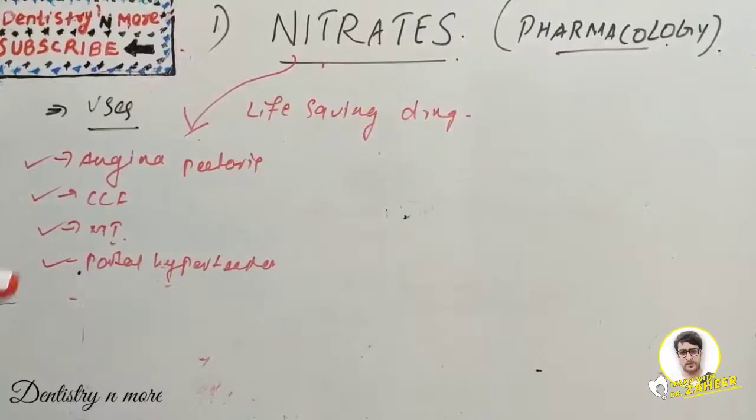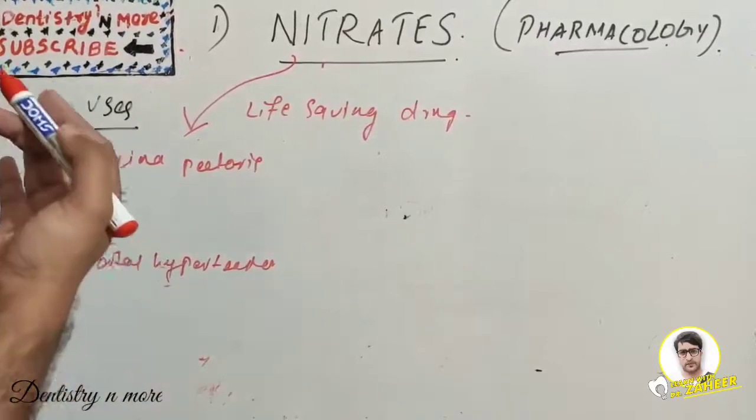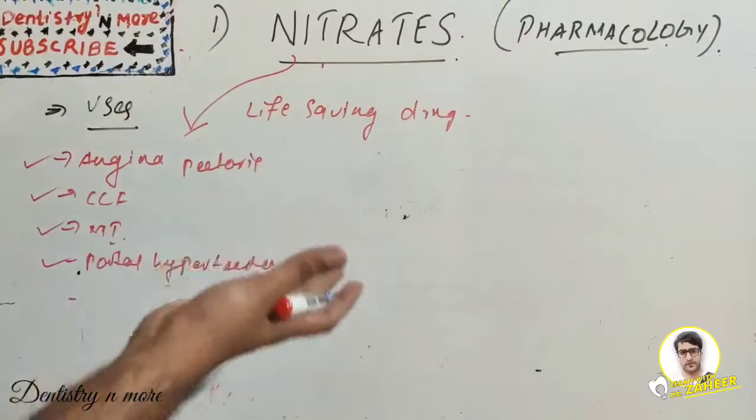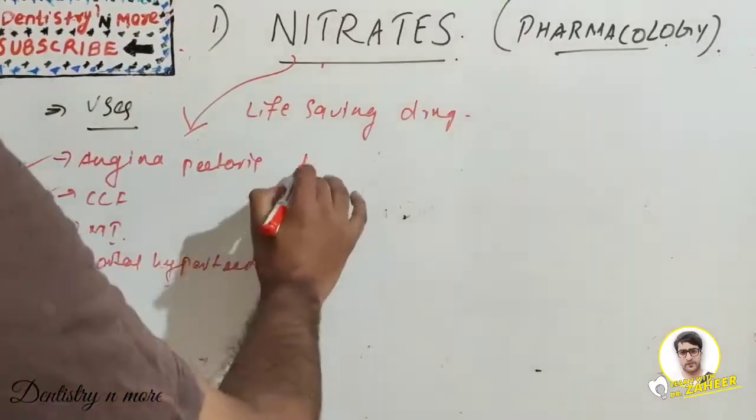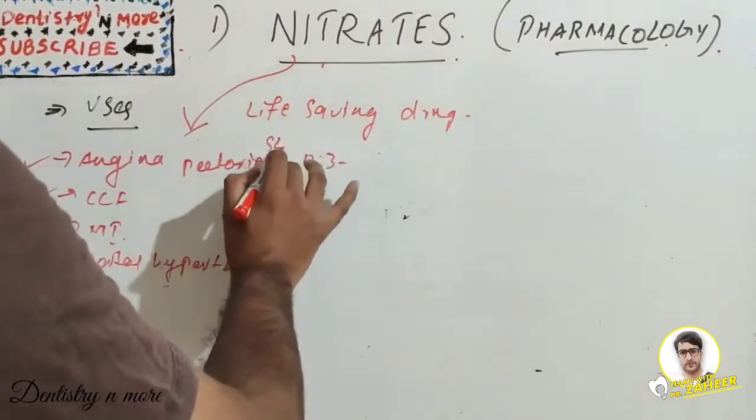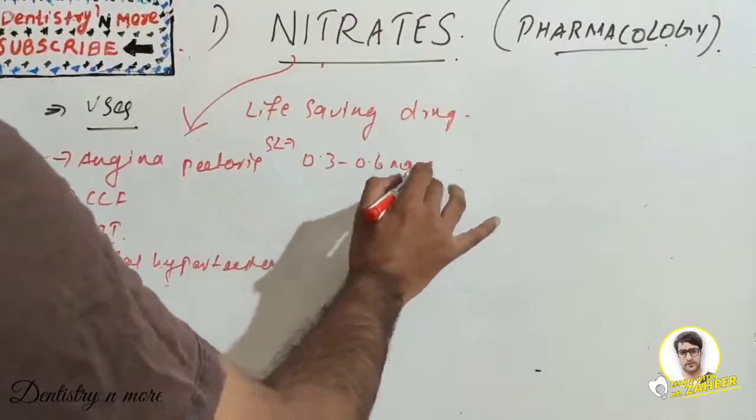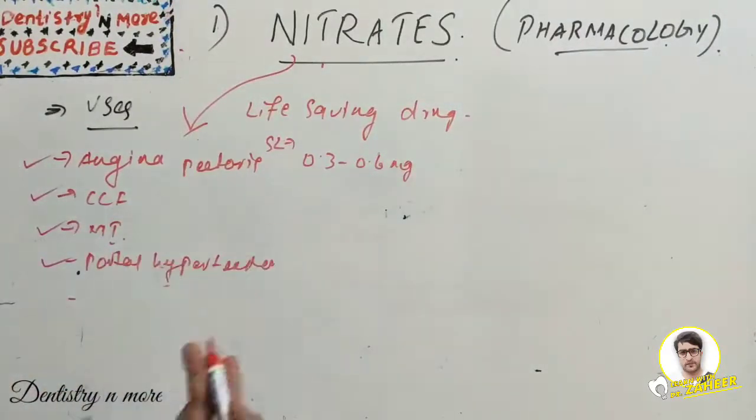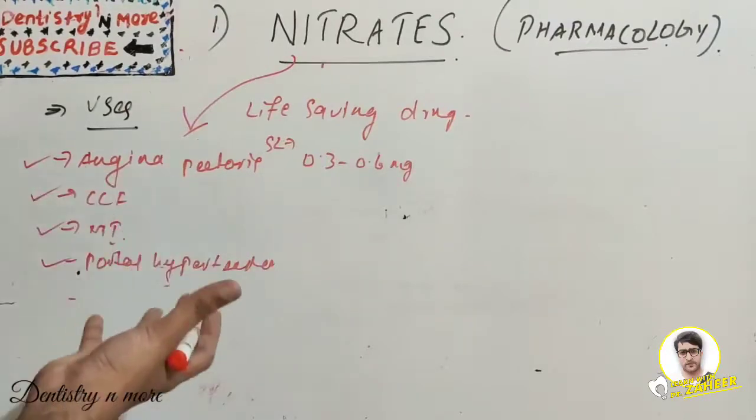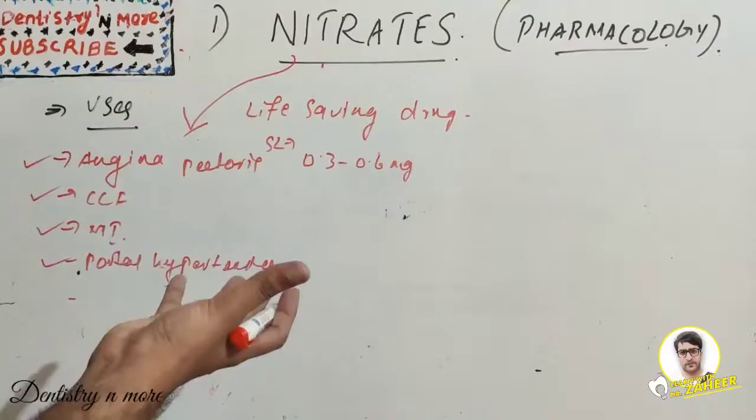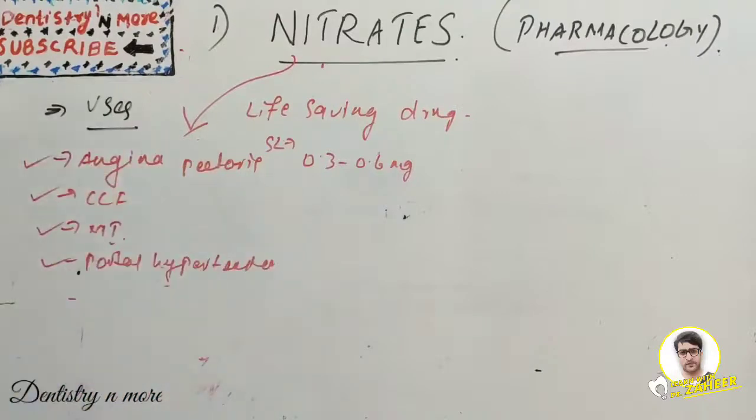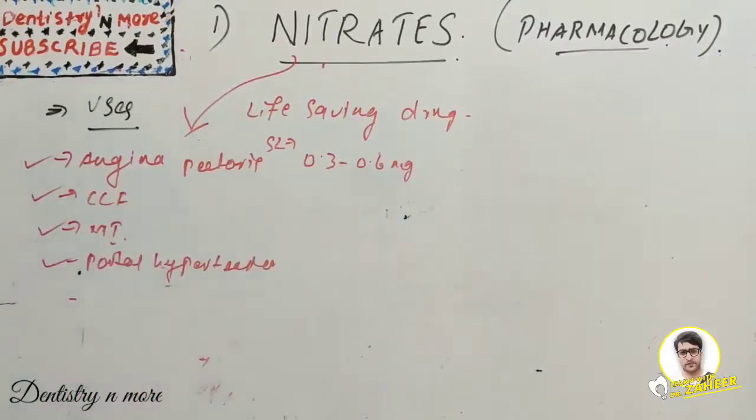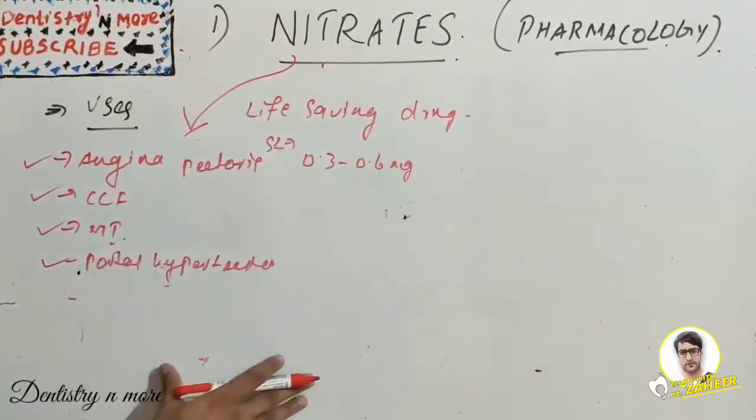Its dosage in sublingual tablets can be 0.3 to 0.6 milligram. That is sublingually 0.6 mg can be given. As a spray it can be given 0.4 milligram, and can also be given as ointment, transdermal, or IV. Isosorbide dinitrate can be again given sublingually or as chewable tablets.